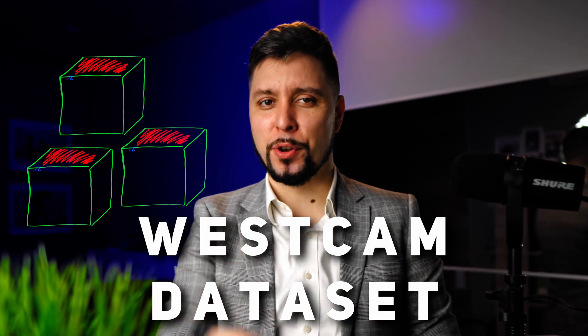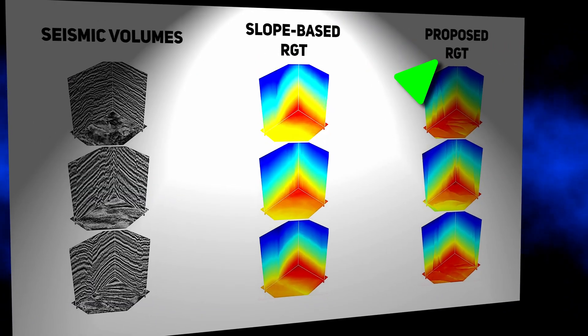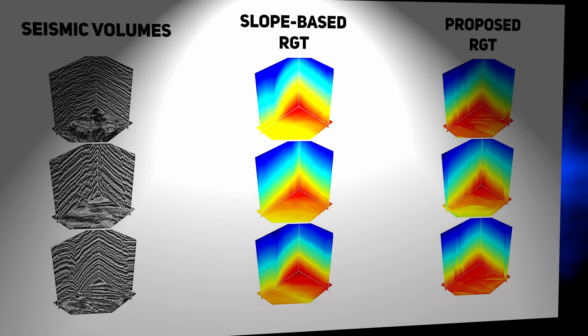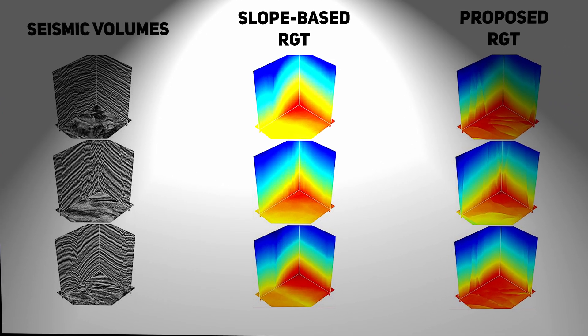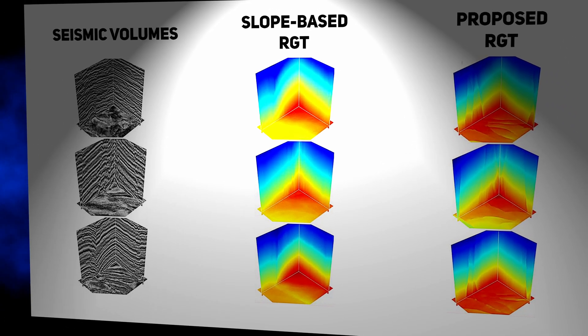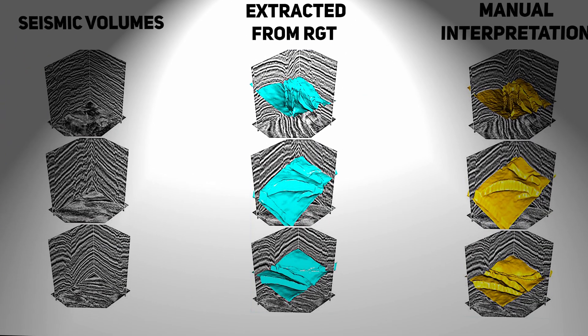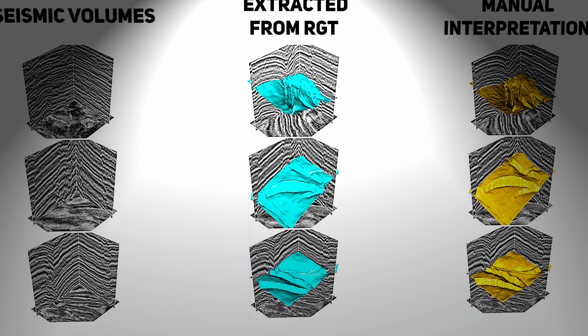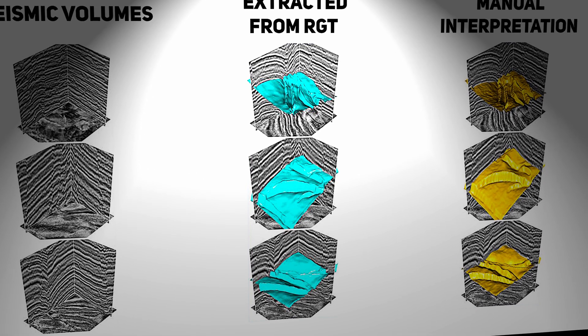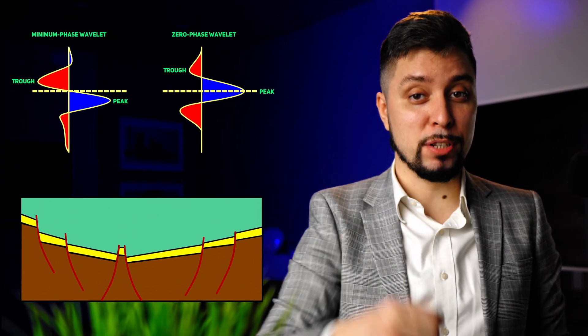The authors selected three seismic cubes from a real dataset to predict the corresponding RGT volumes using the trained neural network. The predicted RGT volumes preserved sharp structural features, followed lateral reflection discontinuities, and consistently extracted horizon surfaces that closely followed the seismic structures, indicating that the method works well on this field dataset, even with different structures, patterns, and wavelet frequencies than the training seismic images.